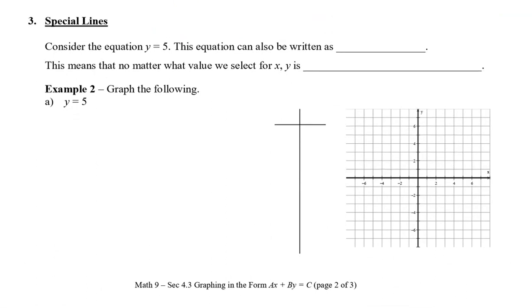Alright, so consider the equation y equals 5. So, we can actually rewrite this equation so that it looks like this: 0 times x plus y equals 5. So, this is the same because 0 times x, we know, is 0. Okay? So, we are left with y equals 5. So, this means that no matter what value we select for x, y is always equal to 5.